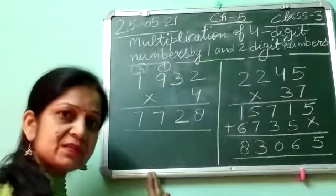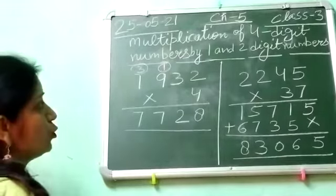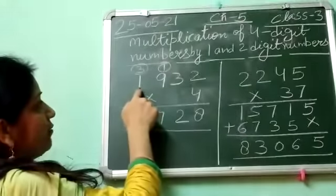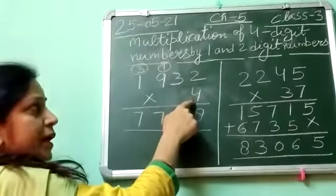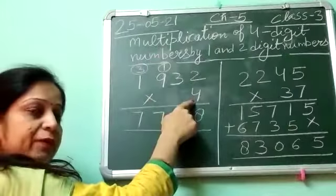Students, you have learnt the tables. For this you have to multiply 1932 by 4, and you have to read the table of 4.